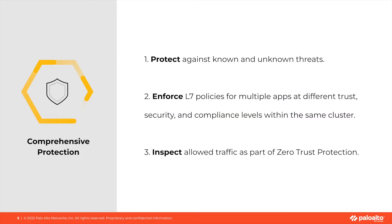In the context of comprehensive protection, these are the three things that your container network security tool should enable you to do. The first is protect against known and unknown threats such as log4j prior to December 2021. The second is enforce layer 7 policies for multiple apps at different trust, security, and compliance levels within the same cluster. And the third is inspect allowed traffic as part of zero trust protection.